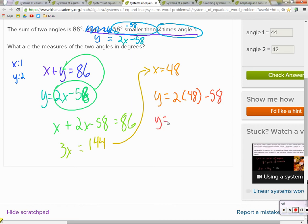So 2 times 48 is 96. 96 minus 58 is 38. 38. 38.